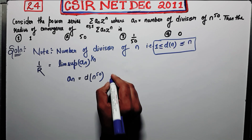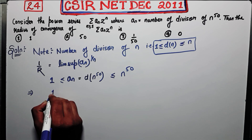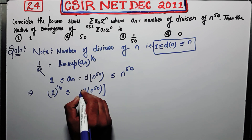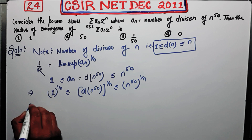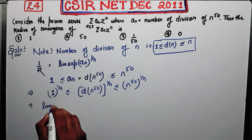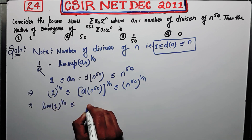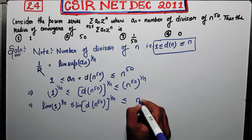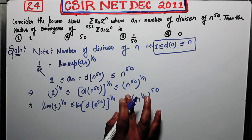From the inequality d(n) ≤ n, we can write: 1 ≤ d(n)^50 ≤ n^50. Taking the 1/n-th power throughout: 1^(1/n) ≤ [d(n)^50]^(1/n) ≤ n^(50/n). Since the limit exists in this case, we can write limit rather than lim sup.